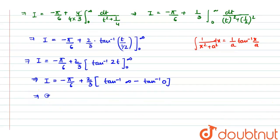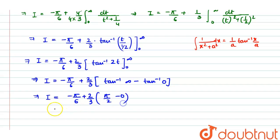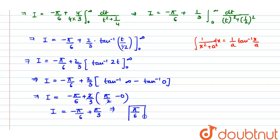So I = -π/6 + (2/3)·(π/2). The 2s cancel, giving -π/6 + π/3. Taking LCM: π/3 - π/6 = π/6. Therefore, the solution of the given integral is π/6.